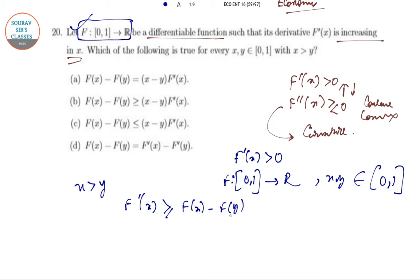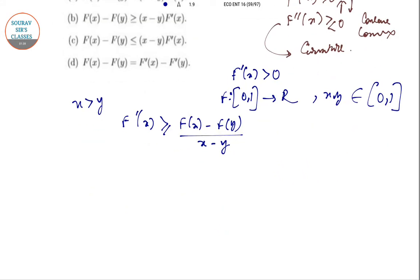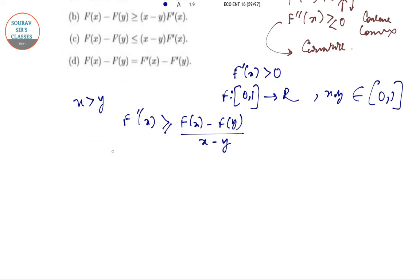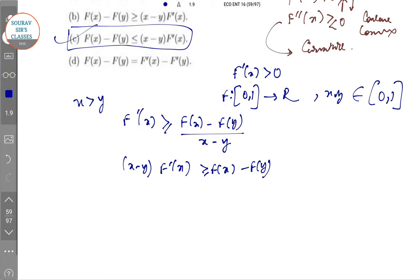f'(x) ≥ [f(x) - f(y)]/(x - y). If you multiply both sides by (x - y), you get (x - y)f'(x) ≥ f(x) - f(y). Looking at the options, the only one that matches is option C, which is given in the opposite form: f(x) - f(y) ≤ (x - y)f'(x). So option C is the correct answer.